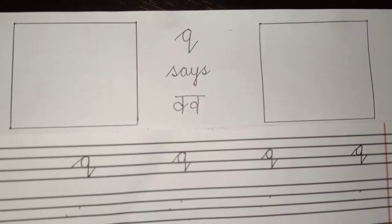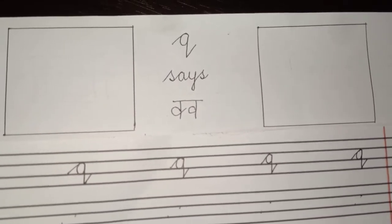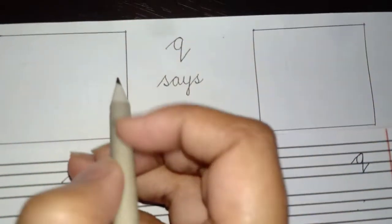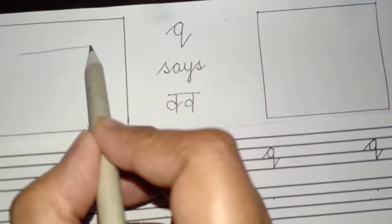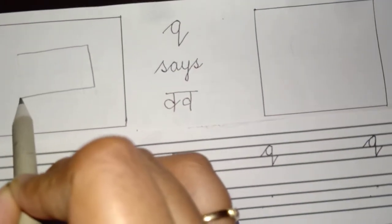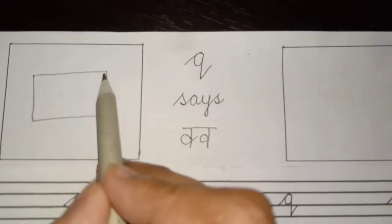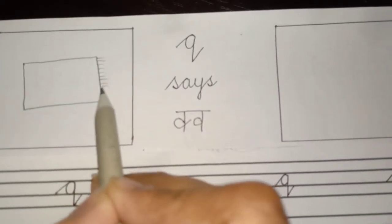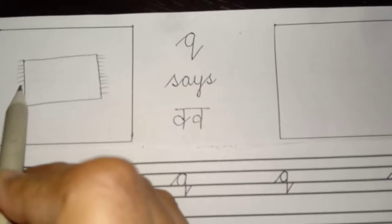Okay, now let us learn how to draw pictures with letter Q. In the first box we are going to draw a quilt. Make a rectangle like this, sleeping line, standing line, one more long sleeping line and join it with a standing line. You have to make small, small sleeping lines like this.